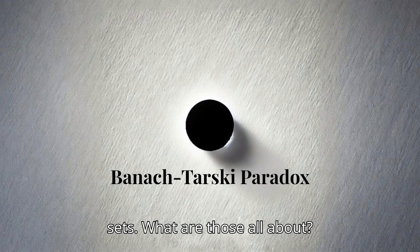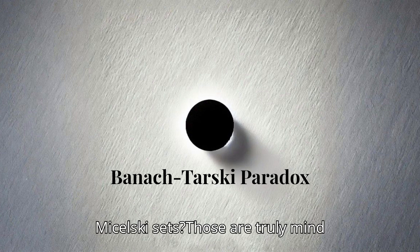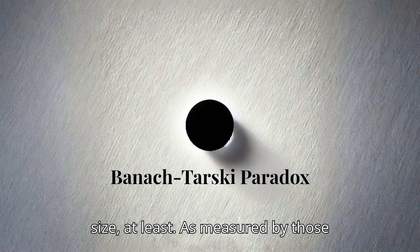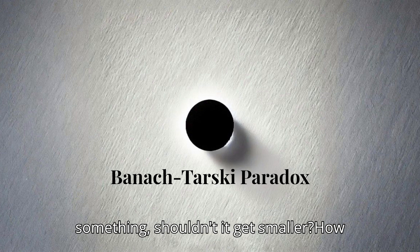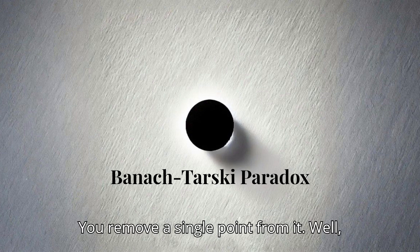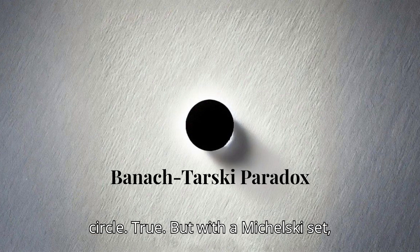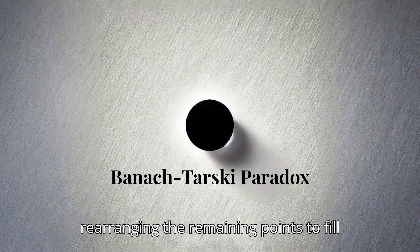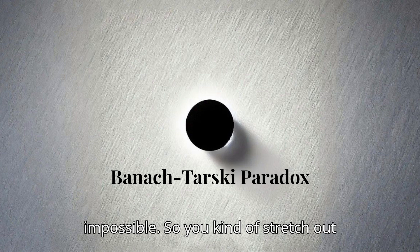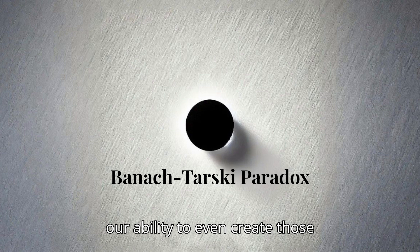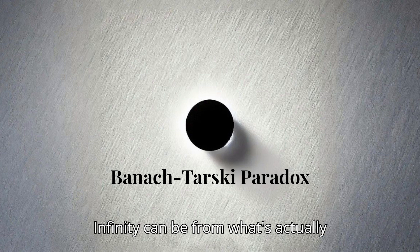The thesis also mentioned these things called Mysielski sets. Those are truly mind-boggling. You can remove any finite number of points from them, but it doesn't actually change their essential size, at least as measured by those invariant measures. If you remove something, shouldn't it get smaller? Well, it comes down to that counterintuitive nature of infinity. Imagine a circle — you remove a single point from it. A circle with a missing piece is definitely different from a complete circle. But with a Mysielski set, you can find a transformation that perfectly maps the original circle onto the one with the missing point. It's like rearranging the remaining points to fill in the gap, even though it seems impossible. And the fact that these Mysielski sets exist is deeply tied to our ability to create those paradoxical decompositions in the first place.